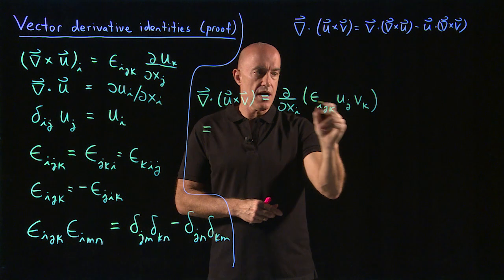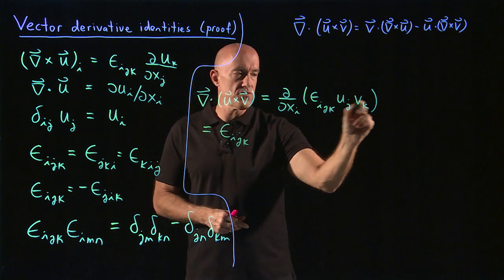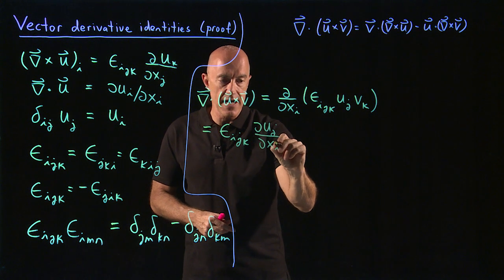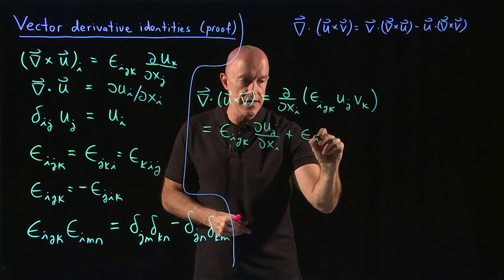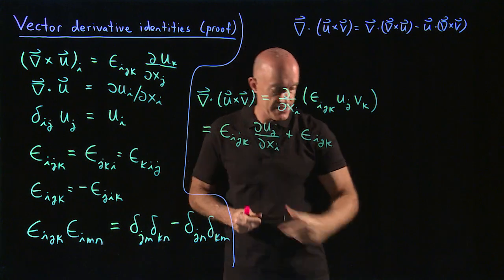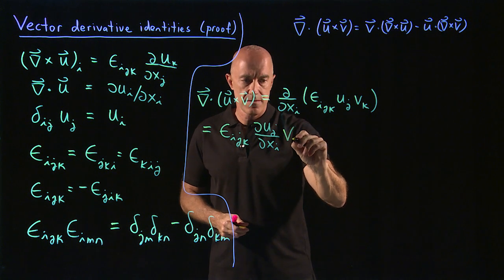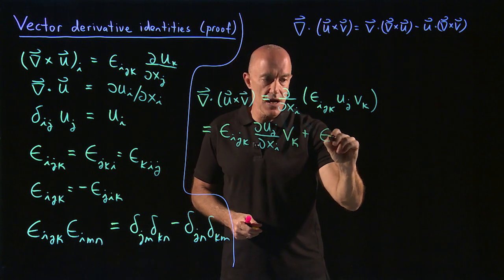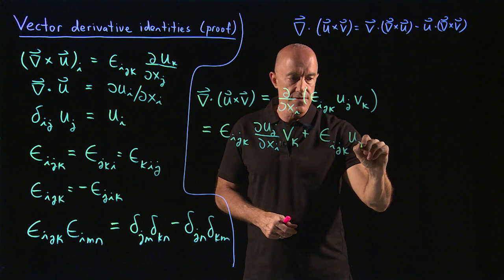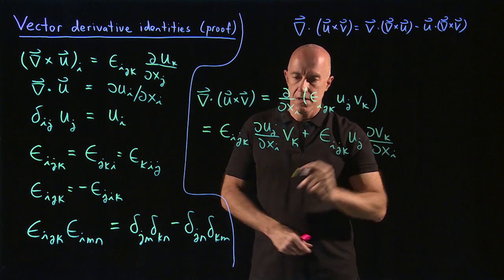So this is equal to epsilon_ijk times the derivative of the first, which would be du_j/dx_i times v_k, plus epsilon_ijk times the first times the derivative of the second. So derivative of the first times the second plus epsilon_ijk times the first times the derivative of the second, which is u_j dv_k/dx_i.